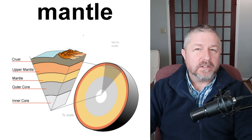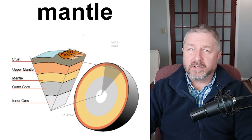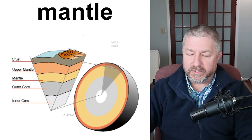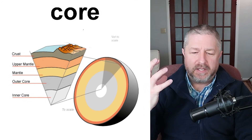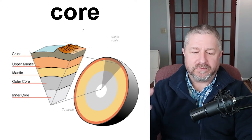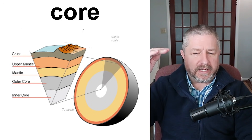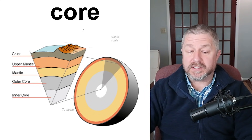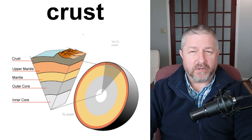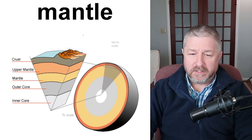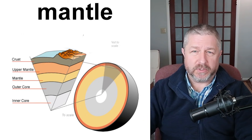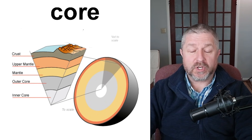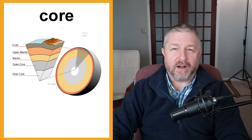Underneath the crust, you have what's called the mantle. The mantle is the part of the earth between the crust and the core. The core of the earth is the hot center. There are probably more layers than those three, but for simplicity: we have the crust, the mantle which is below the crust but above the core, and the core — the hot center of our planet.